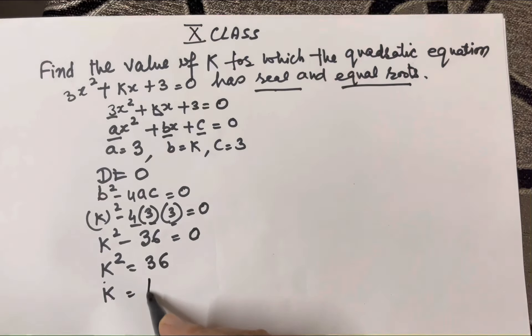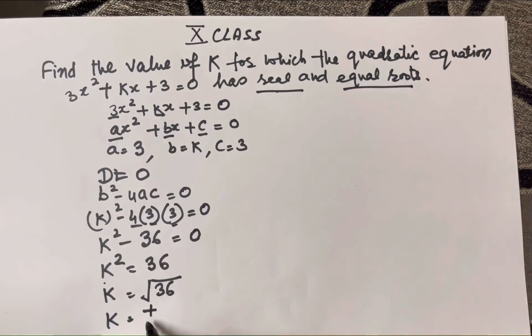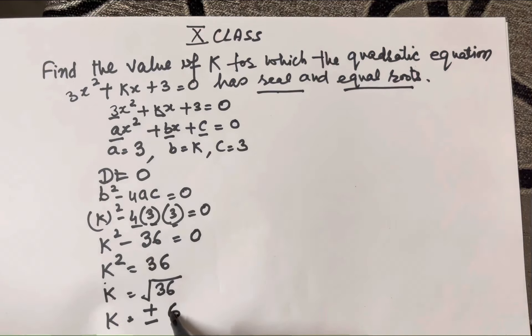What will be the value of k? Taking the square root of 36, k is equal to plus or minus 6.